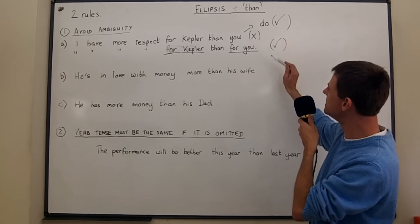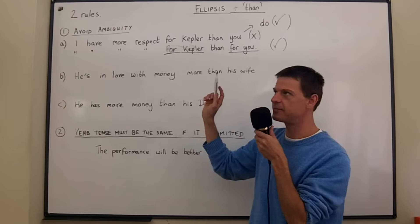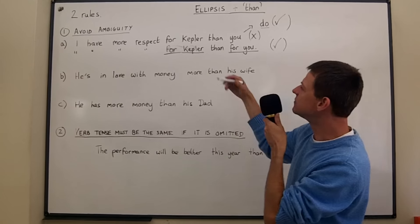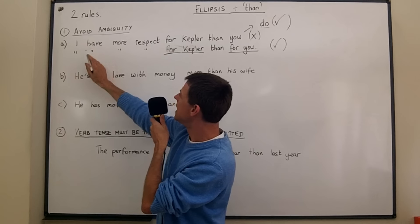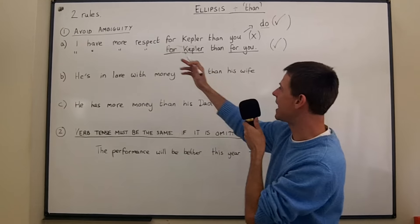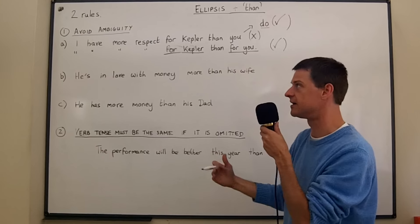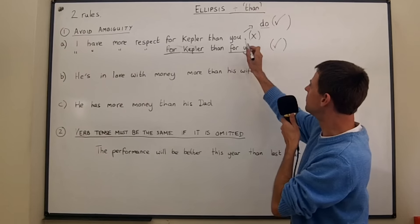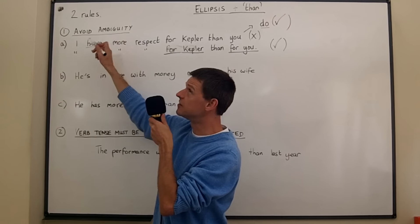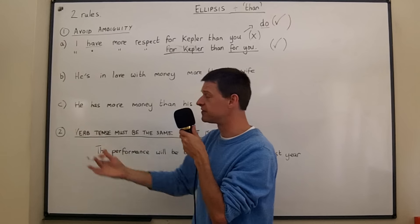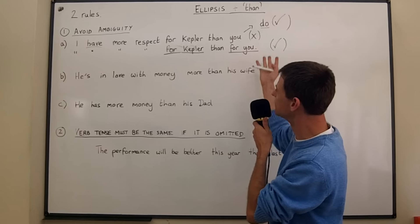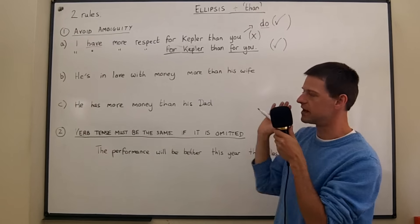That's how we change the meanings. It has to be the auxiliary verb 'do' because this is present simple and it's with 'you' — it won't be 'does', which would be for 'he' or 'she.' 'I have more respect for Kepler than he does, than she does' — that's possible too. But with 'you' we need 'do' because it's present simple 'have', not the present perfect. So we use 'do' and it's balanced on both sides of 'than' — the parallelism rule holds.